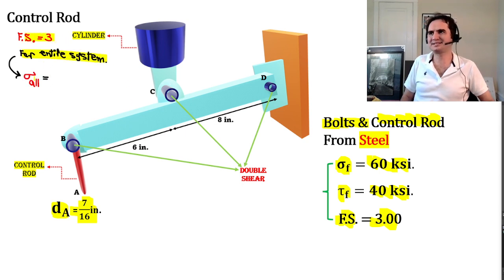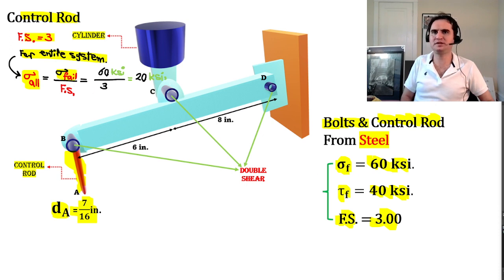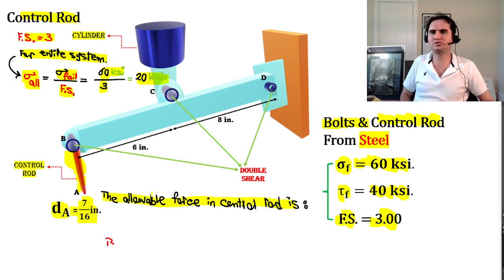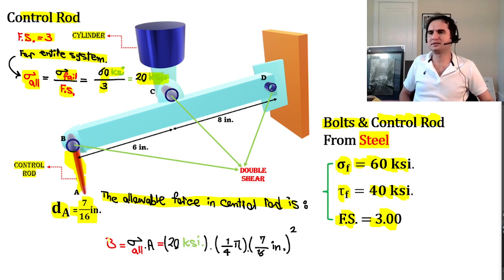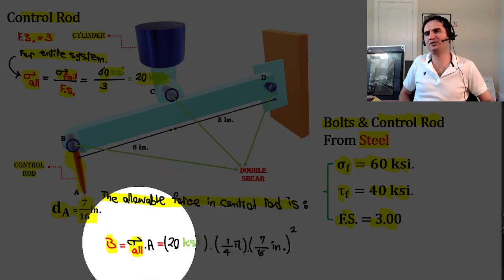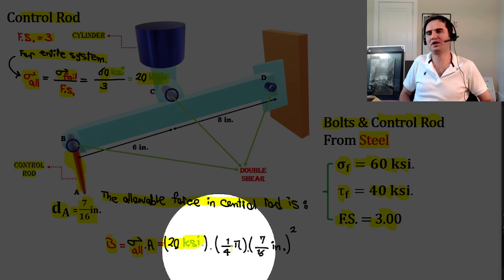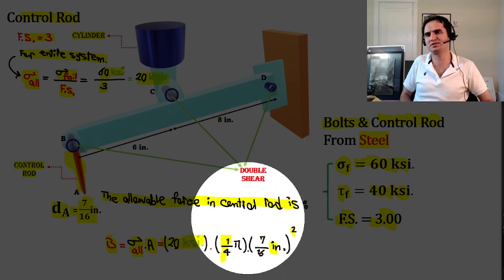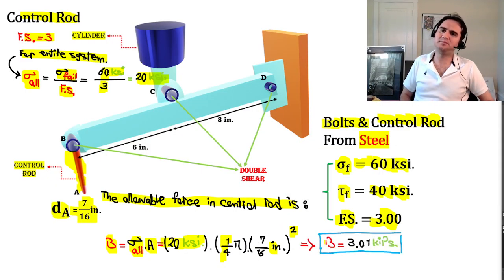Since the factor of safety for the entire system is 3, the allowable stress for the control rod is σ_allowable = σ_failure / FS = 60 KSI / 3 = 20 KSI. The allowable force in the control rod is F_B = σ_allowable × A = 20 × (π/4) × (7/16)² = 3.01 kips.